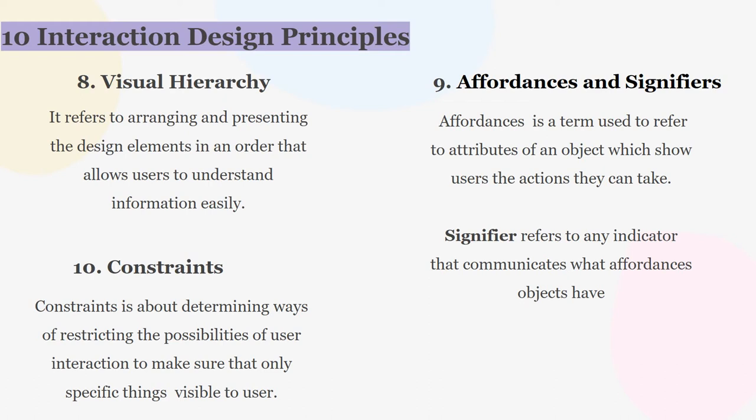Constraints is about determining ways of restricting the possibilities of user interaction to make sure that only specific things are visible to the user. You cannot provide endless possibilities to users — they will get confused. So you have to add constraints into the interface in order to guide the user in a particular direction.